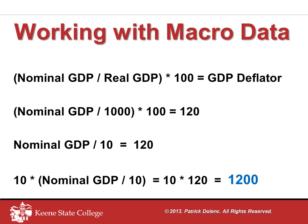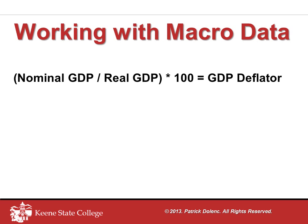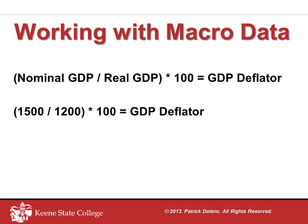Placing 1200 in that initial cell allows us to move into year 3. In year 3, we're trying to find the GDP deflator. This time we have the nominal value and the real value, but we need to find the price index. Once again, returning to the relationship: nominal divided by real, times 100, gives us the deflator. We plug in 1500 for nominal GDP and 1200 for real GDP, take that ratio, multiply it by 100, and that will give us the deflator.